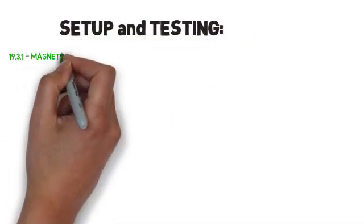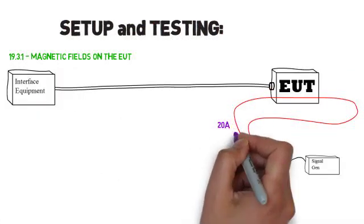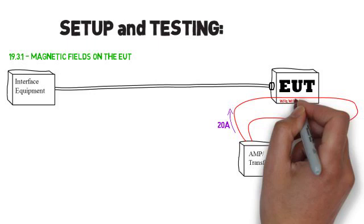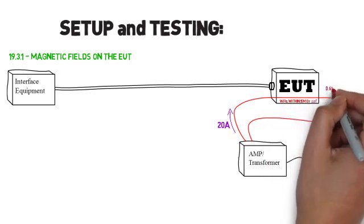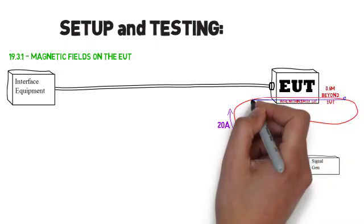Magnetic fields is simply executed by running 20 amps at 400 hertz through a straight wire located within 0.15 meters of the EUT. The wire must extend 0.6 meters beyond each extremity of the EUT. This can be accomplished by simply sticking a wire through PCB piping for ease of handling.